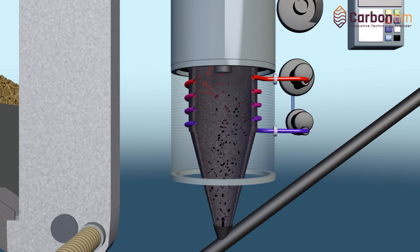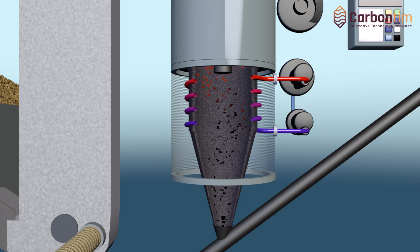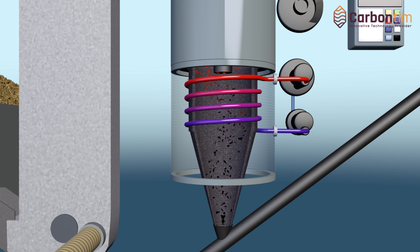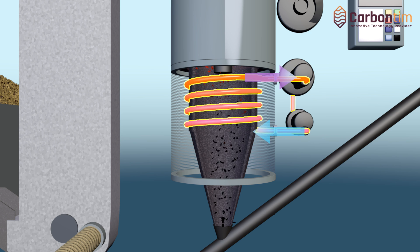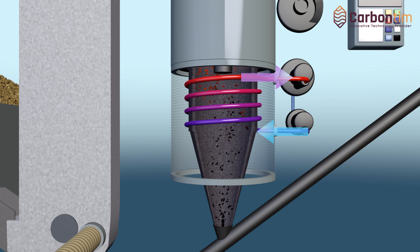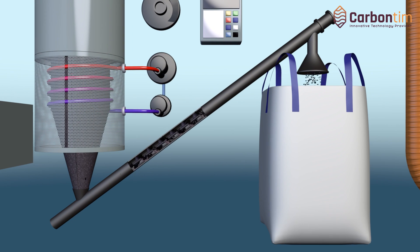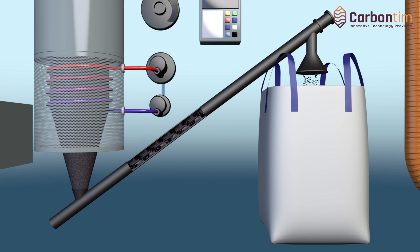The cooling process. The ready material is cooled to ambient temperature with the use of the cross-flow water cooler. In the next stage, carbonised biomass is loaded to big bags, pelletised, or transferred directly to the boiler.